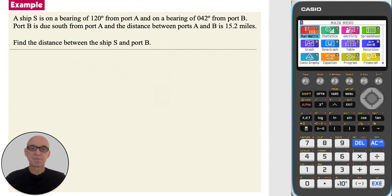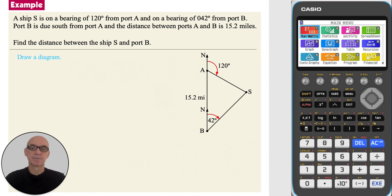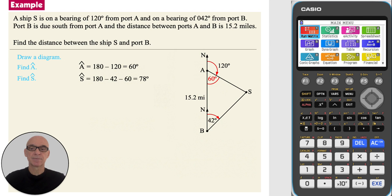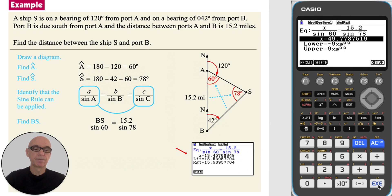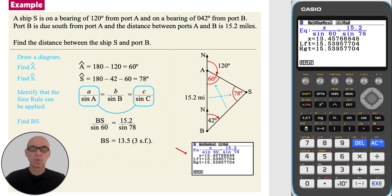In this question, to find the distance between the ship S and port B, start by drawing a diagram as shown. Find angle A, which is 60 degrees, and angle S, which is 78 degrees. Identify that the sine rule can be applied — since one pair of angle and side are known and angle A is known, we can find BS, the side opposite angle A. Substitute in the values and use Solver to solve the equation. Write down the value of X, which represents BS. So the ship S is 13.5 miles from port B, correct to three significant figures.